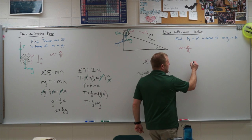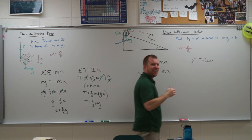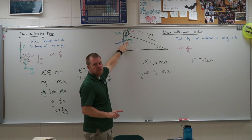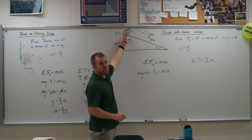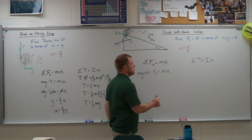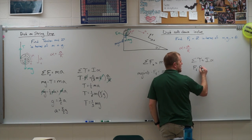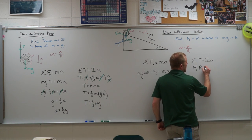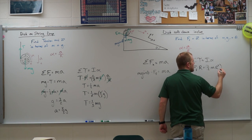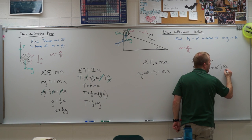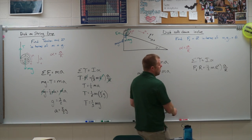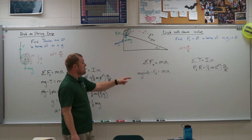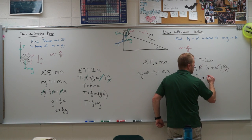For the torque equation, I have I alpha, and since it's still a disc, the moment of inertia is one-half MR squared. What forces produce torques? Gravity produces no torque because it acts at the axis of rotation. The normal force also produces no torque because it is perpendicular to the moment arm. Only the force of friction produces a torque: friction times its distance from the axis R. Those are perpendicular, so no cross product needed. I'm left with friction times R equal to one-half MR squared times A over R.